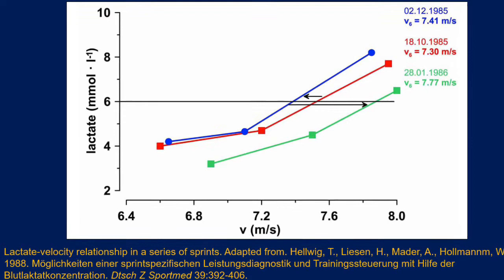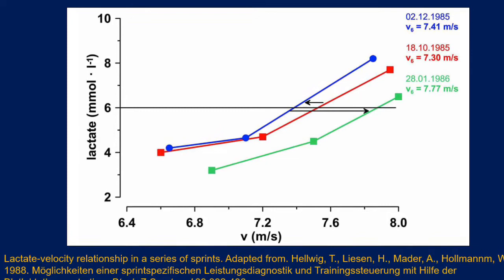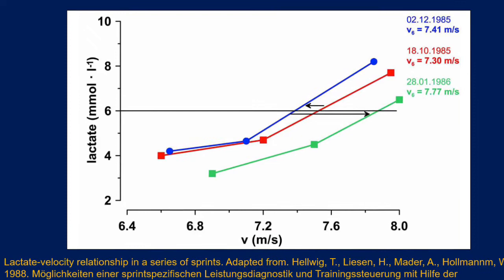Again, a lactate is taken, a recovery is introduced, and we then do a third sprint, again half a second slower. In the graph that you can see here, it's that process being repeated, but you can see it over three periods of time.